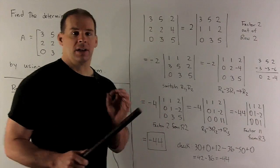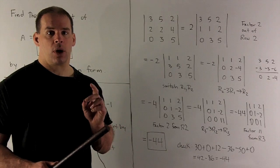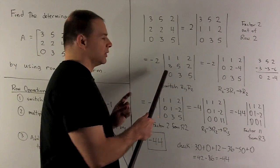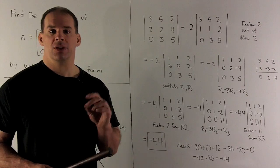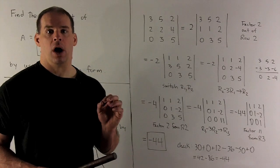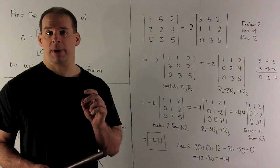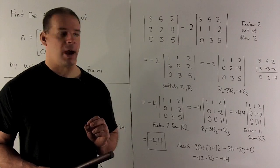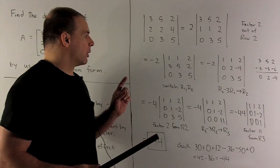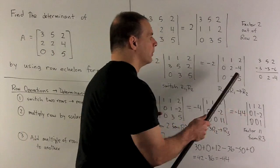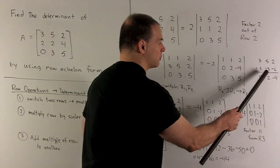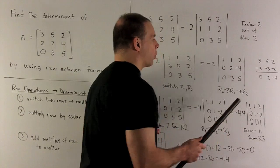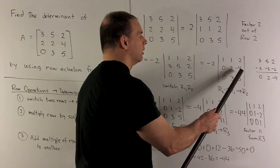Next step toward row echelon form: I want to turn this 3 into a 0. So what we'll do is take row 2 and subtract off 3 times row 1. The effect on the determinant is going to be no effect at all. That gives us the new row: 0, 2, minus 4. So we put that in the middle row.